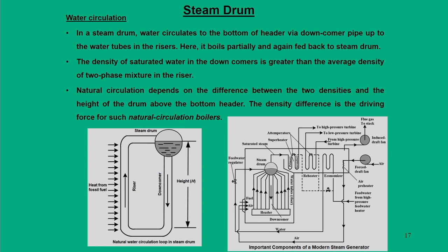We will talk about specific components: in the steam drum we have risers and downcomers. The downcomer is for water to come out from the steam drum, and the riser is for steam that goes up into the steam drum. The water comes down through the downcomer at height h, receives heat from the fossil fuel, and rises again into the steam drum. This process is called natural circulation.